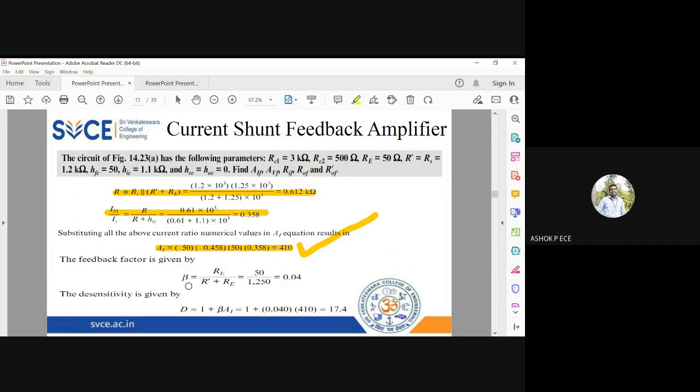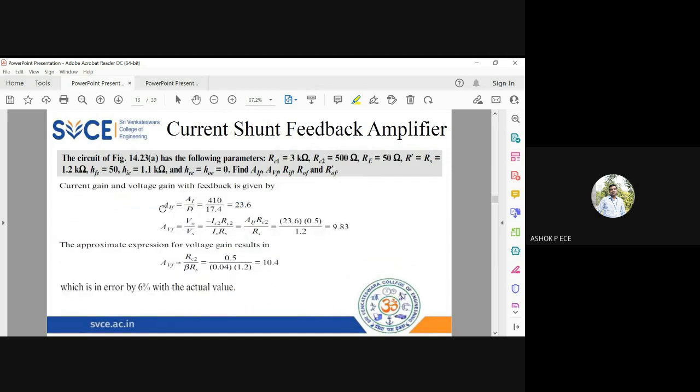Now find beta. Beta equals re by r' plus re. RE is 50 and r' is 1.2k, and you can see the beta value is very low, just 4 percent. Find D: D is 1 plus beta times ai, which is 17.4. So aif is 23.6.